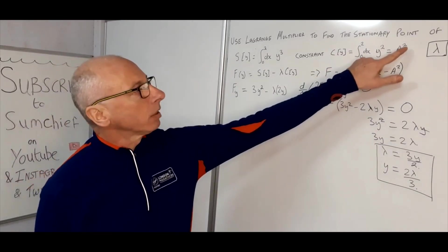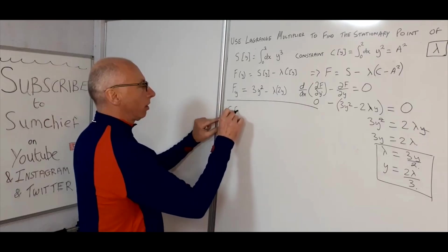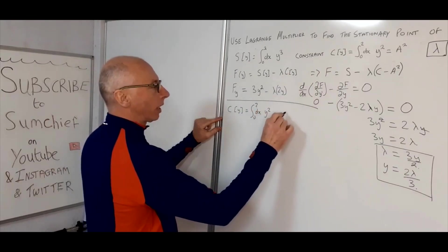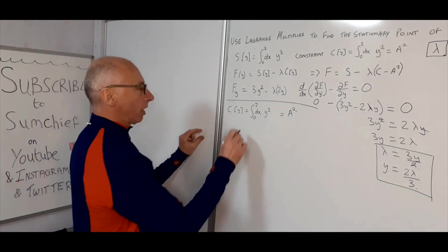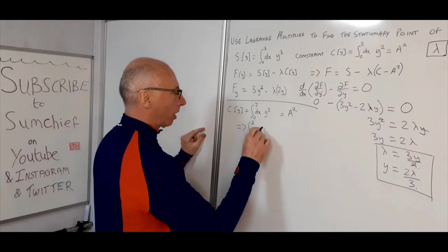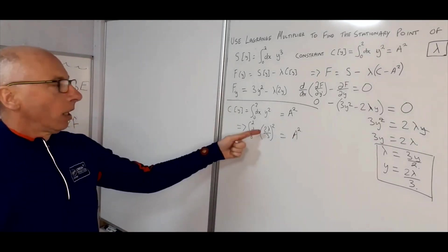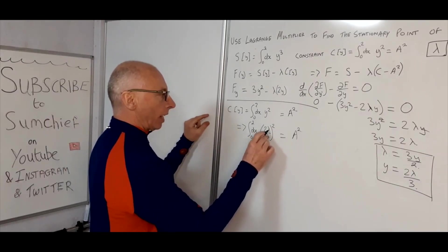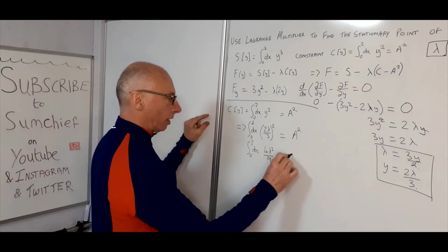So we've got Y equals 2 lambda over 3. So we could plug that into our constraint and maybe we can find out what the A is. So let's work on this integral. C(Y) equals integral from 0 to 2 with regards to X, Y squared, and that will equal A squared. So we've got what our Y is from the Euler-Lagrange equation which is 2 lambda over 3. So bringing this down here we go from 0 to 2 dx, 2 lambda over 3 squared, and that will equal A squared.